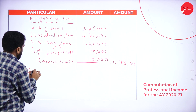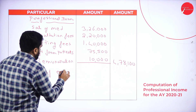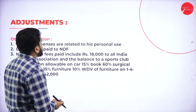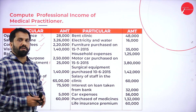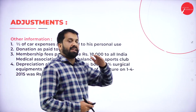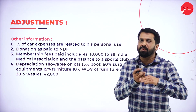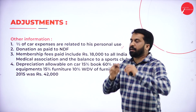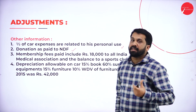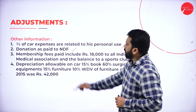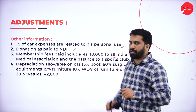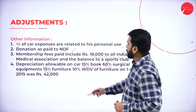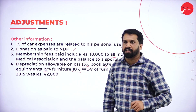Now we have to minus professional expenses. While reading expenses, check if there is any adjustment related to them. Half of the car expenses are related to personal use — whenever we deal with car, we must note this. Donation paid to NDF (National Defense Fund) is not part of your profession. Membership fees paid includes 18,000 to All India Medical — we must consider that. Depreciation rates: car 15%, books 60%, surgical equipment 15%, furniture 10%.